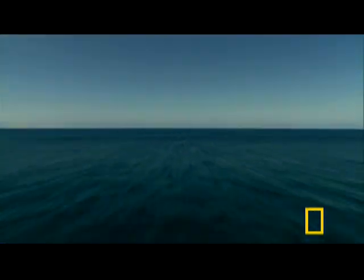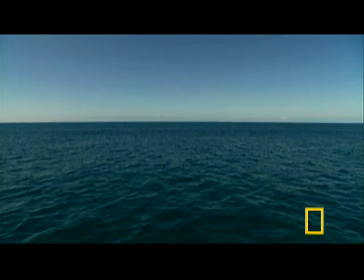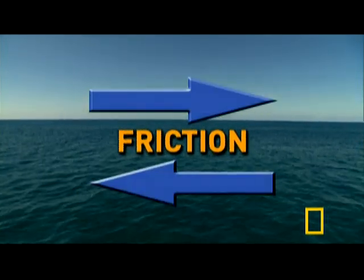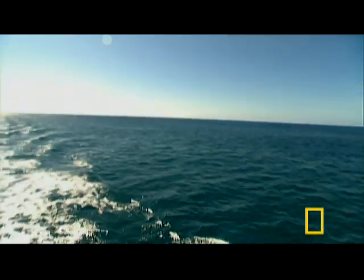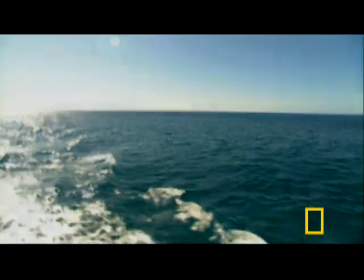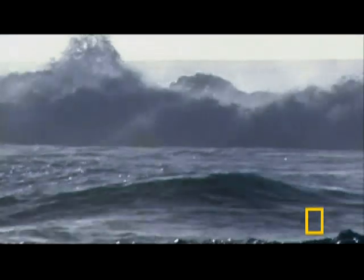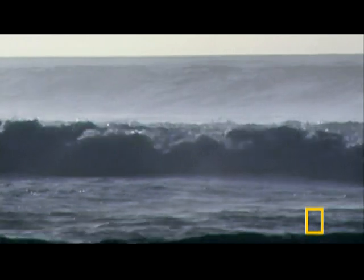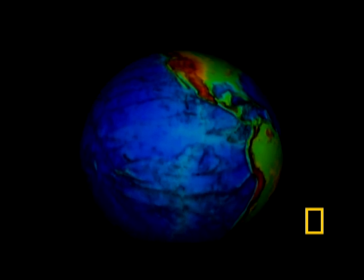Waves are generated by wind blowing across the surface of the ocean, and energy from the wind is transferred to the wave through friction between the air and water. Wind that blows faster, longer, and further will transfer more energy and create bigger waves. Waves sometimes travel across vast expanses of open ocean — in some cases as far as 10,000 miles. A very strong storm in the southwest Pacific can create a swell that travels all the way across the Pacific Ocean, ending up impacting Mexico or the west coast of North America.